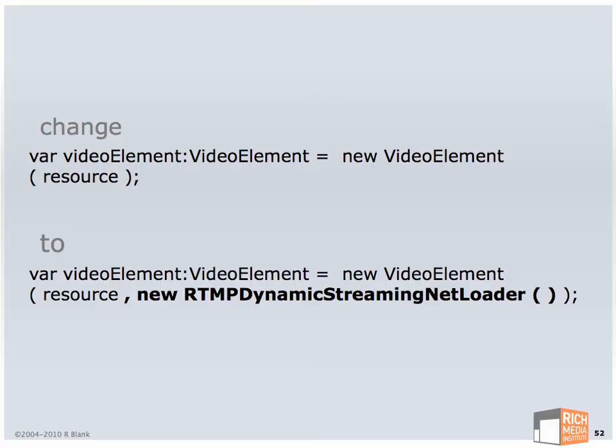This is why I'm teaching you about the net loader. In order to implement dynamic streaming, we need to tell Flash not to use a regular old net loader. You can optionally add a second parameter. If it's empty — if there's no second parameter — Flash just goes with a regular net loader. But if you want to implement dynamic streaming, you need to override that.